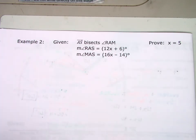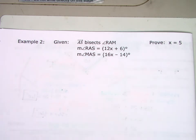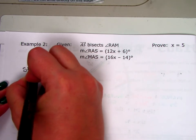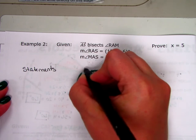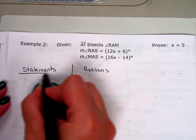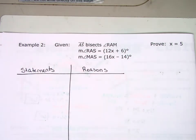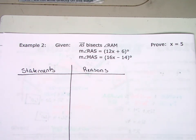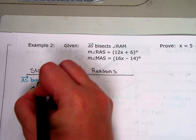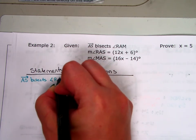Look — a given and a proof, which means we get to do a proof. I'm going to have statements and reasons. My first statement is my first given: ray AS bisects angle RAM.